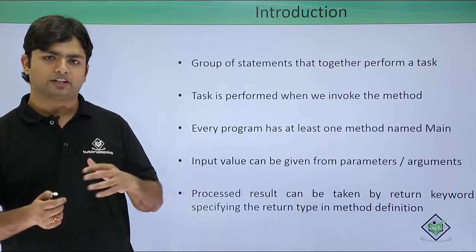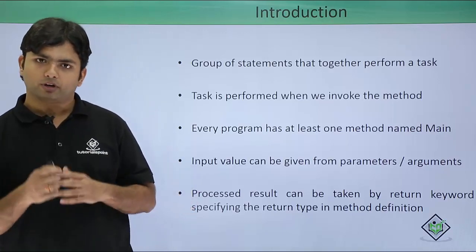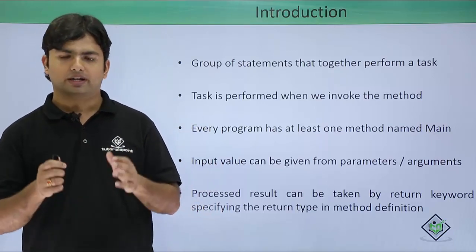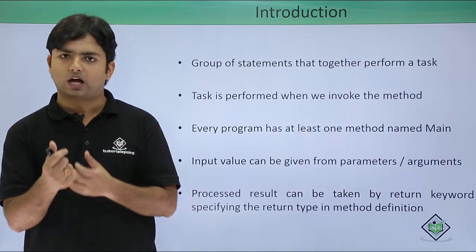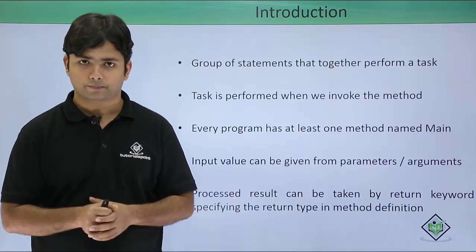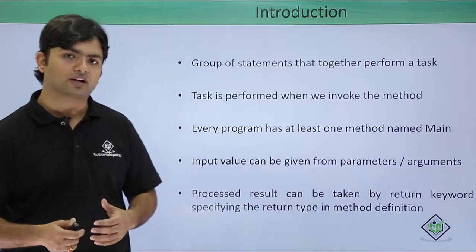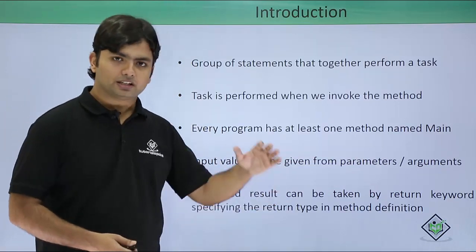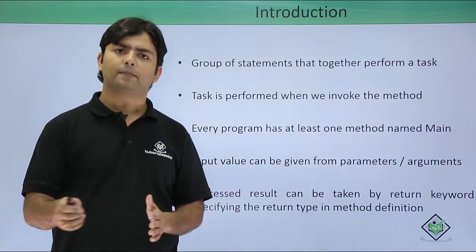Whenever you want to process some data, you can give and take data to and from a method. If you want to process a couple of values, you can define parameters or arguments inside a method signature. Once these input values are processed, your method can return the output as the return type. So input values can be given via parameters and arguments, and after processing, the result is returned as the return type.